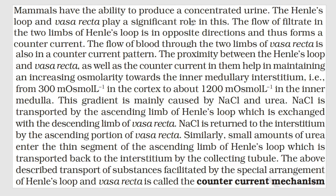Mammals have the ability to produce concentrated urine. Why is it necessary to produce concentrated urine? Because we have a scarcity of water, so we have to save water. This is a characteristic of mammals — to save water we produce concentrated urine. The loop of Henle and vasa recta play a significant role in this.